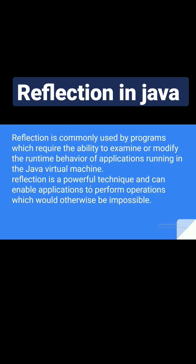Reflection in Java is commonly used by programmers who require the ability to examine or modify the runtime behavior of applications running in the JVM, or Java Virtual Machine. Reflection is a powerful technique that can enable applications to perform operations which would otherwise be impossible. By using the Reflection API we can change the behavior of our class, methods, and constructors. The Reflection API belongs to the java.lang.reflect package.